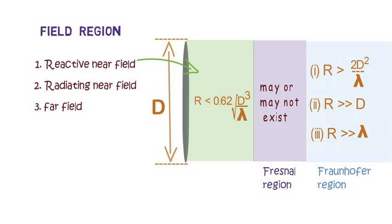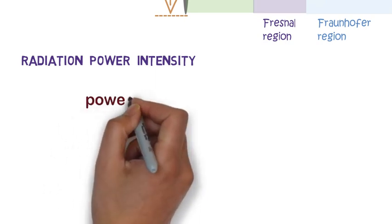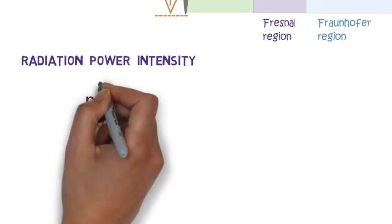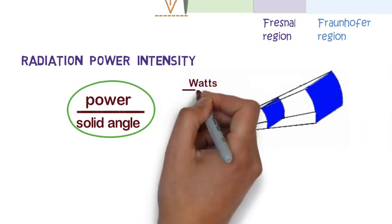The next important term in antenna is radiation power intensity. Radiation power intensity is the strength of the radiated wave in any direction and is given by power per unit solid angle. Its value is defined for a given solid angle and its unit is watts per steradian.